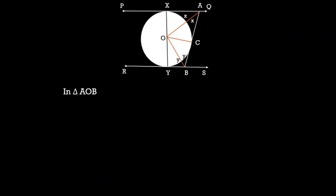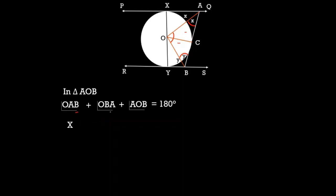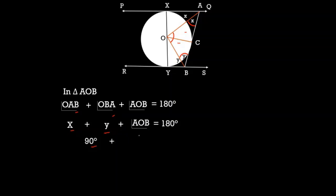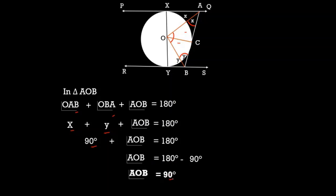Now, in triangle AOB, the sum of interior angles equals 180 degrees. So angle OAB plus angle OBA plus angle AOB equals 180 degrees. Writing this gives you one mark. Angle OAB is x, angle OBA is y, and as we proved earlier, x plus y is 90 degrees. Therefore, angle AOB equals 180 minus 90, which is 90 degrees. Hence angle AOB equals 90 degrees. Half a mark for the final answer.